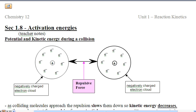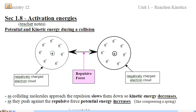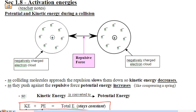Section 1.8 is a direct continuation from kinetic energies. We're going to bring it one step further and talk about potential energy. Potential energy is energy contained within the molecules themselves — like a battery has stored energy. Molecules also have the ability to store energy, which comes from the fact that there's a negative cloud of electrons surrounding each molecule.